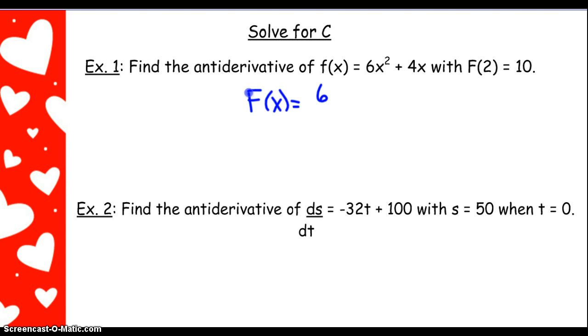So I'm going to have 6x cubed over 3 plus 4x squared over 2 plus c. So let's reduce this down. I'm going to get 2x cubed plus 2x squared plus c.